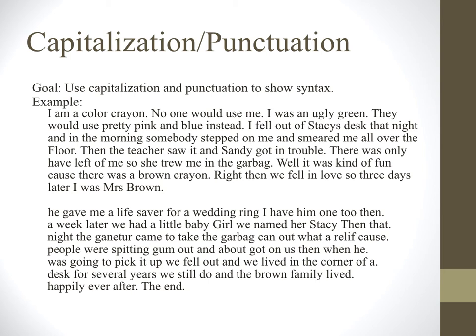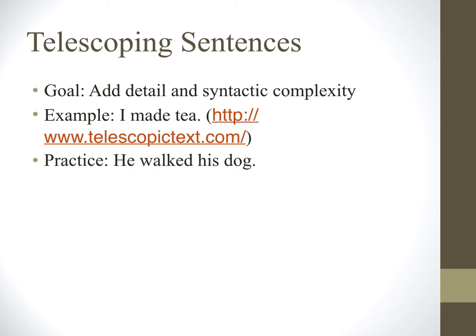Once students get a handle on the basics, often they will spend a while producing structurally simple sentences. Here the goal is to work with students to build some syntactic complexity in their writing. One way to do this is through what are called telescoping sentences. These are sentences that start short and simple. The challenge is to continuously make them longer by adding detail. You can see an example of a telescoping sentence using the link from Blackboard.